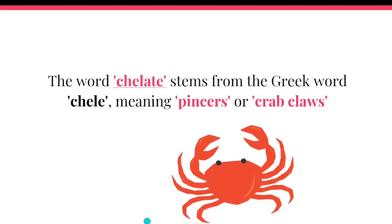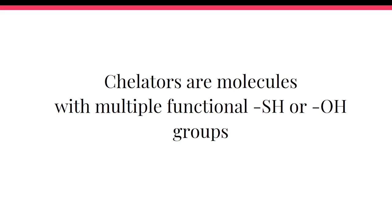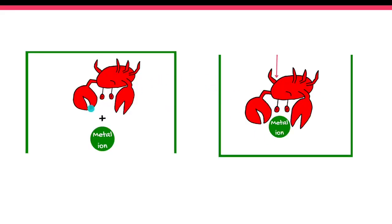The word chelate comes from the Greek and it means pincers or crab claws, and that is exactly how you can imagine a chelator — with these claws. Basically, chelators are molecules with multiple functional SH or OH groups, and these groups build the claws of this crab. The crab with these SH or OH groups hovers over metal ions and binds them.